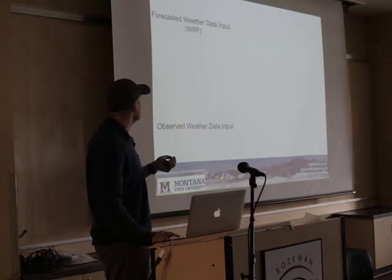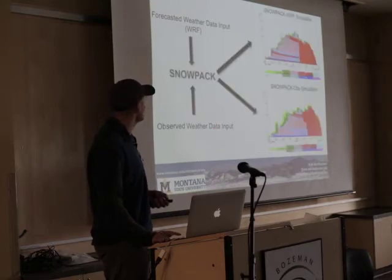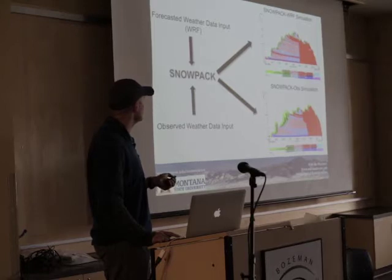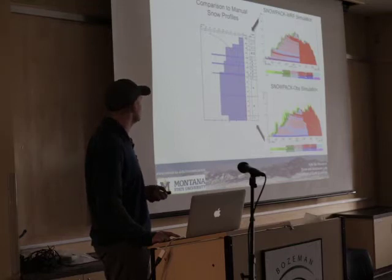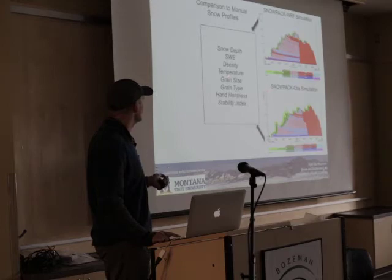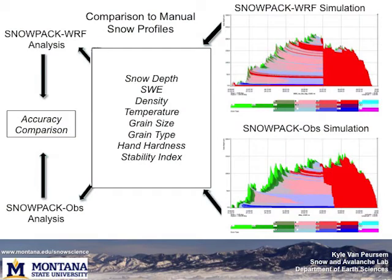We had two inputs: forecasted weather data and observed weather data from our weather station. We put them through the SNOWPACK model to get two simulations — one using observed weather data and one using WARF forecasted data — then compared both to manual snow profiles to see how well they predicted the snowpack. My goal was to compare how much accuracy we lose by using forecasted weather data to drive the model instead of observed weather data.